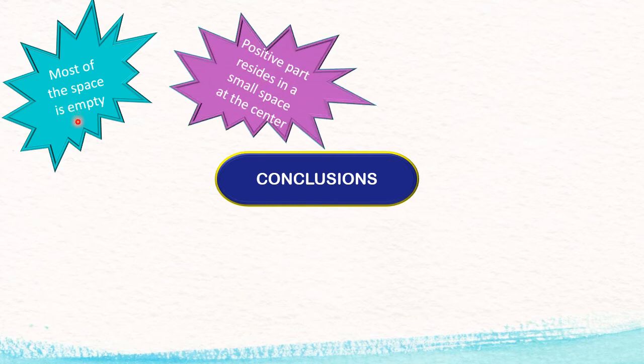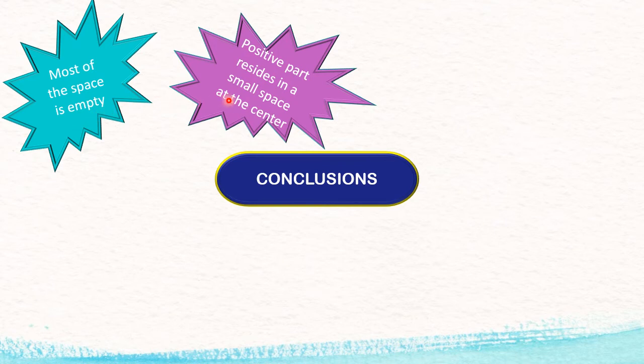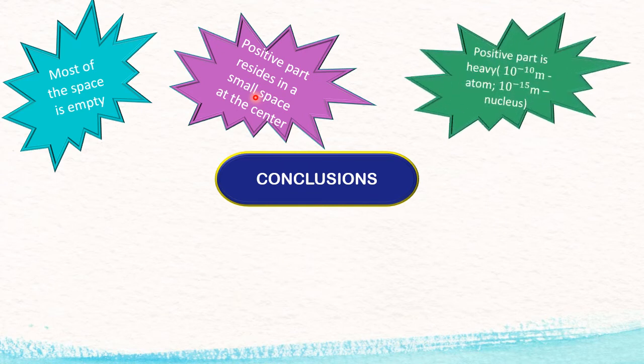Second conclusion was: positive part resides in a small space at the center. Why has he concluded this one? Because third observation, very few came back, one in 20,000. That means the alpha particles which were going straight on the axis, on the symmetry of the center of the atom, they were bouncing back. That means at the center of the atom there is a small region where the plus part is residing, and that is known as nucleus.